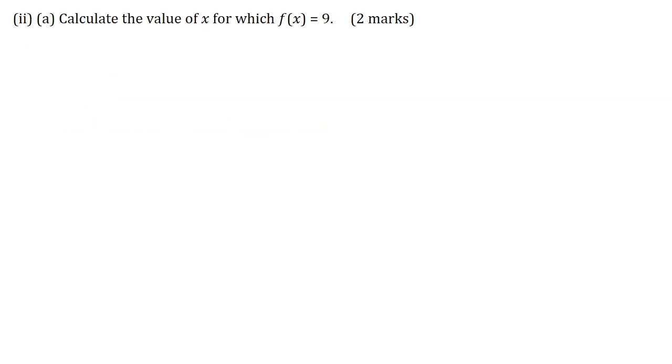Part 2A, calculate the value of x for which f of x is equal to 9 for two marks. I will start off by writing that f of x is equal to 2x plus 7 all over 5. And when f of x is equal to 9, we could equate f of x.